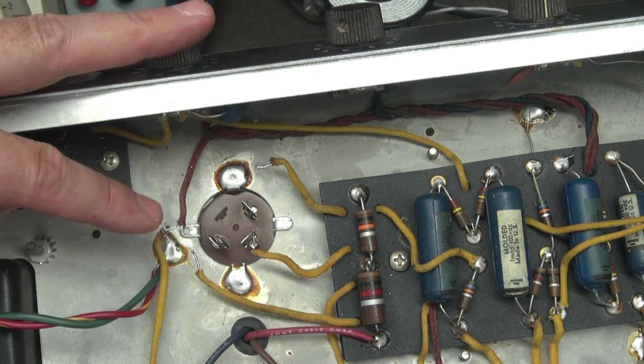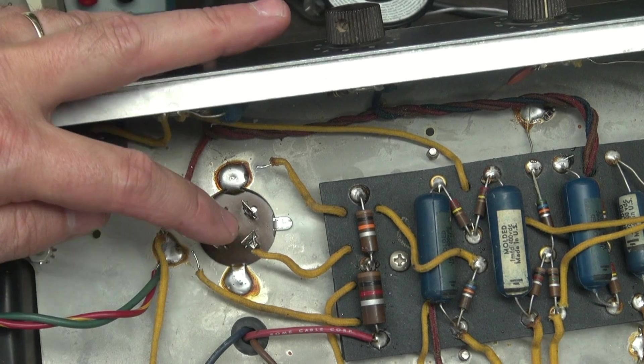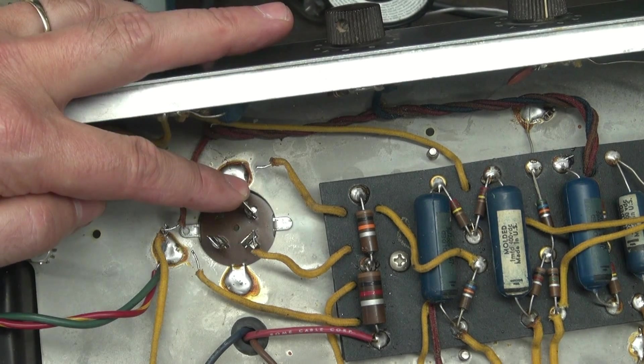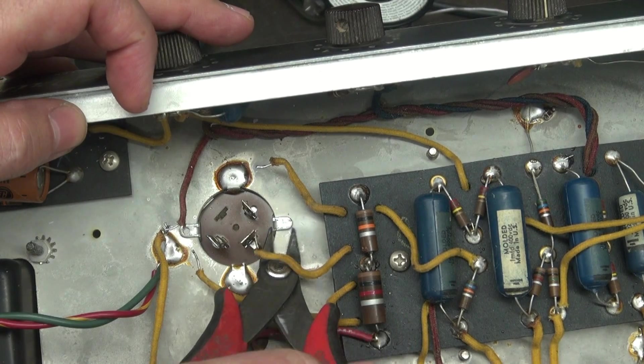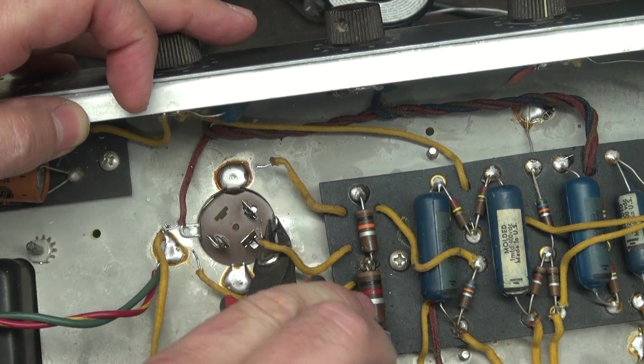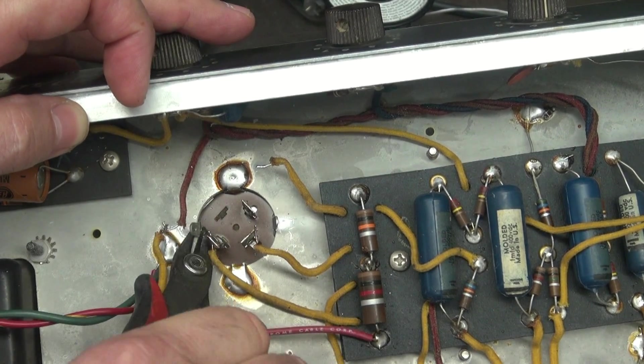So what I did here is I kind of grouped them. So these three went here. This guy goes here. This guy goes here. Next step. We have to take these tabs, bend them up, and get that old cap out.